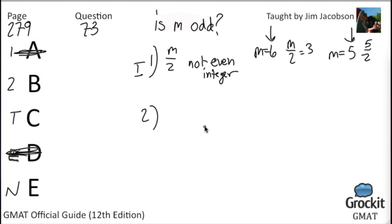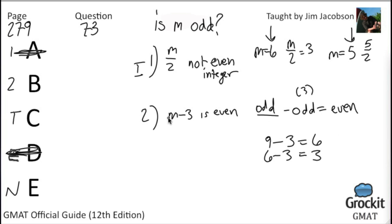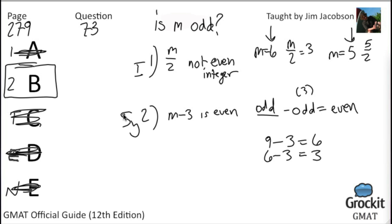Statement 2 tells us that M minus 3 is an even integer. It's worth noting that 3 is odd. An odd minus an odd gives an even: 9 minus 3 is 6, which is even. An even minus an odd gives an odd: 6 minus 3 is 3. So if M minus 3 is even, M itself must be odd. This is sufficient — the answer is yes, M is odd. Answer choice B is correct; statement 2 alone is sufficient.